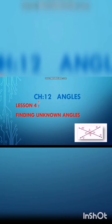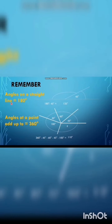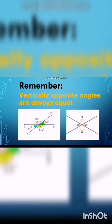Bismillahirrahmanirrahim. Assalamu alaikum students. Today we have a topic from chapter number 12, Angles, and this is lesson number four: Finding Unknown Angles. Before starting today's topic, let's revise some previous concepts. Angles on a straight line add up to 180 degrees, angles at a point add up to 360 degrees, and vertically opposite angles are always equal.